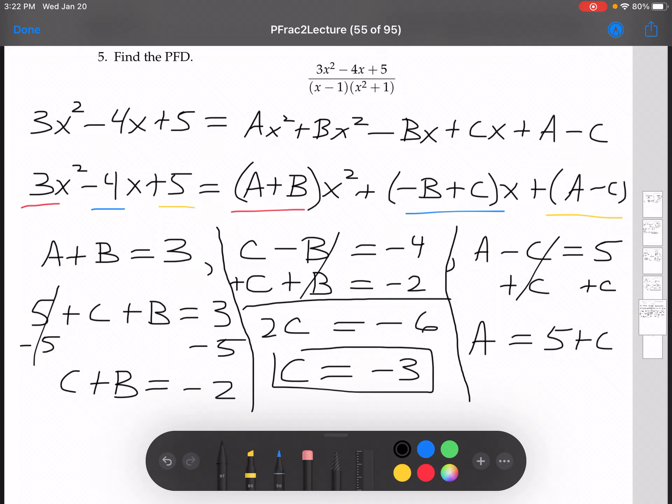Once I know that c equals negative 3, then I'm off to the races. A equals 5 minus 3, a equals 2. If a equals 2, coming back over here, 2 plus b equals 3. Subtract 2 from both sides. B equals 1.